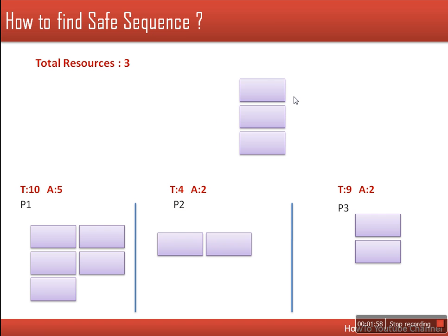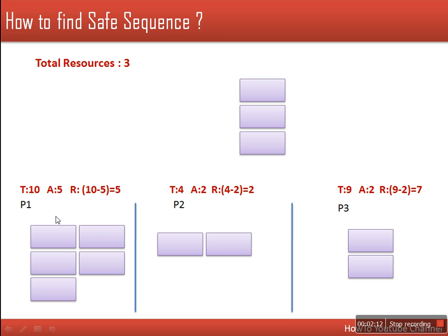Out of the 12 resources, finally we are having 3 resources which are free. Process P1 needs a total of 10 but currently has 5, so it needs 5 more. P2 needs 2 more, and P3 needs 7 more resources. These resources are required to complete their execution — if they won't be allocated, the processes will be waiting forever. We have only 3 available resources, while P1 requires 5, P2 requires 2, and P3 requires 7.